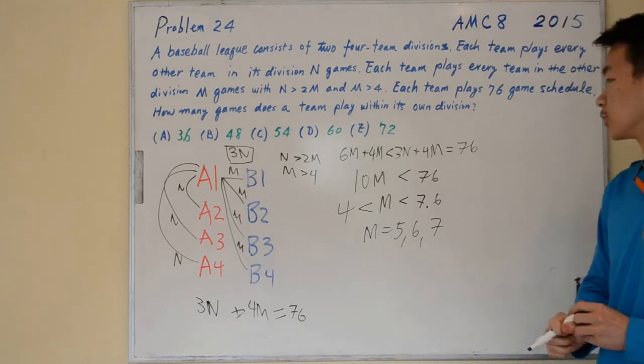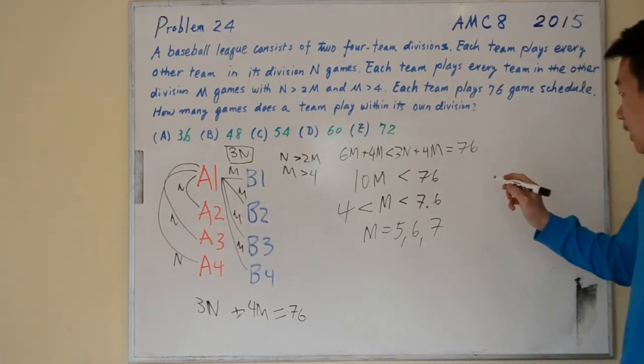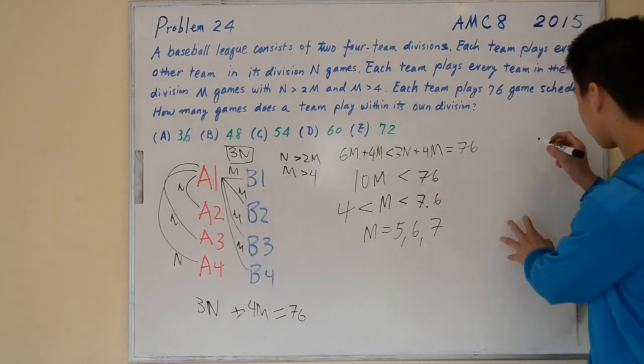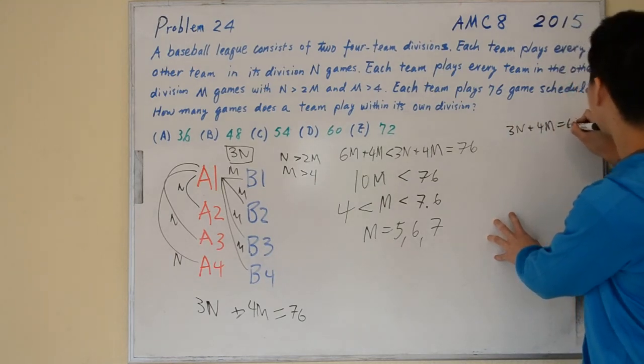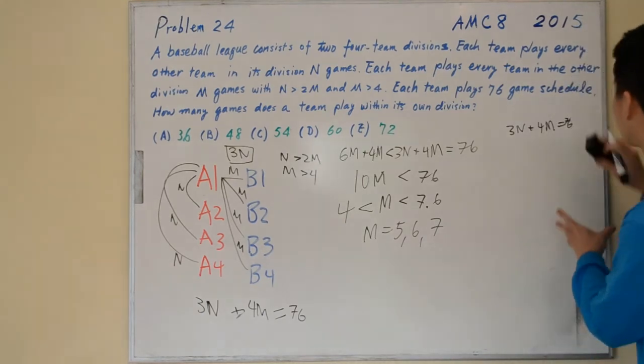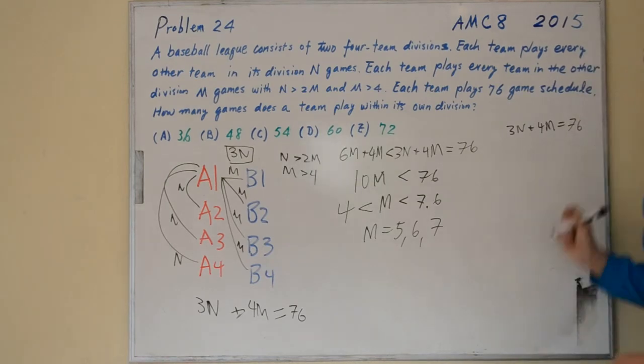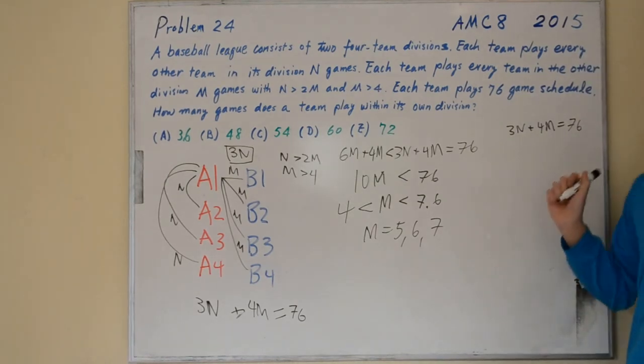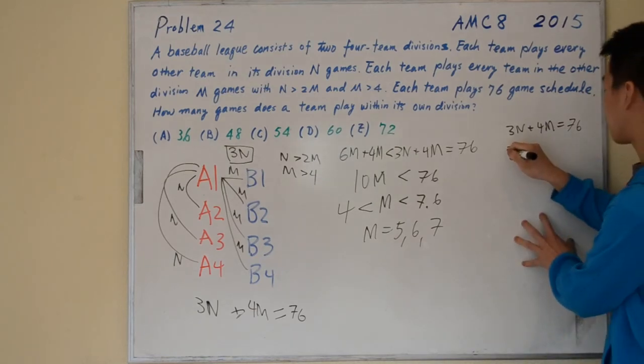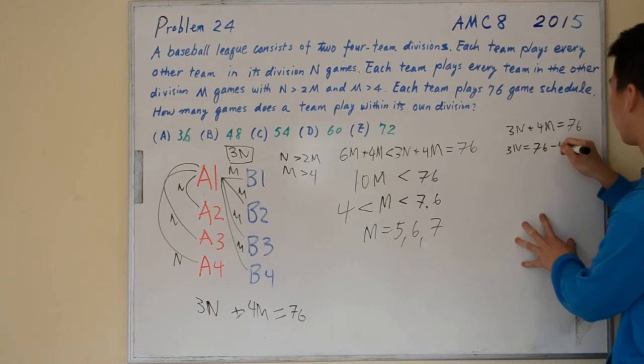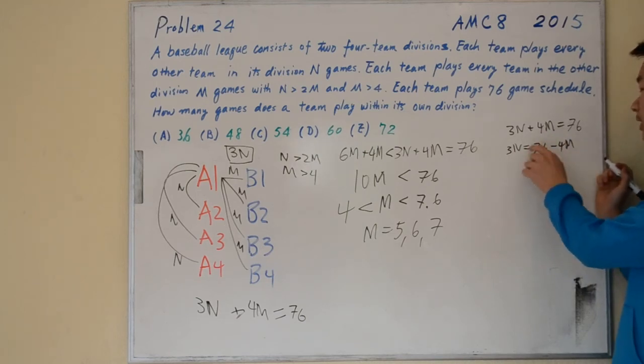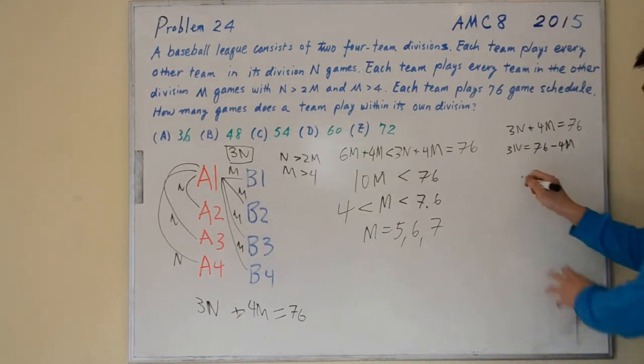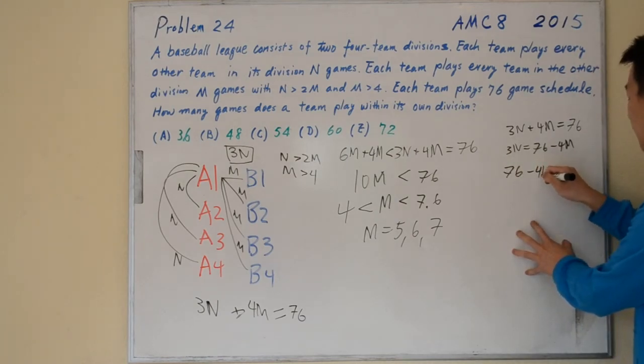Looking at the original equation again, we have 3N plus 4M equals 76. We know that N and M are all integers, so 3N equals 76 minus 4M. Because we know for sure that N is an integer, this number must be divisible by 3. So 76 minus 4M is congruent to 0 mod 3.